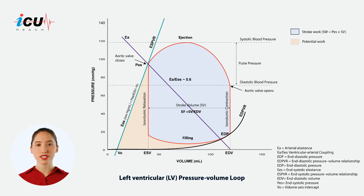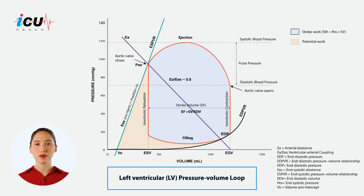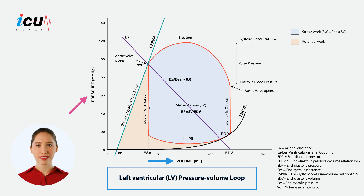The volume pressure loop of the heart, also known as the left ventricular pressure volume loop, is a graphical representation of the relationship between the pressure and volume in the left ventricle during one cardiac cycle.